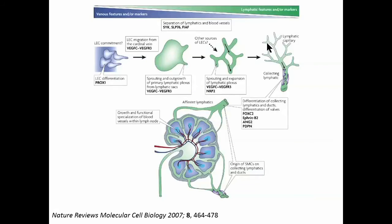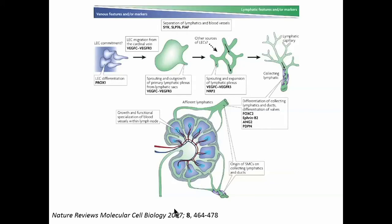This slide is a recapitulation of what I just mentioned, simply illustrating that similar events have to occur within the developing lymphoid organs as well, so that eventually there is a structural relationship between the node, the afferent lymphatics, and the efferent lymphatics in order for all of the functions to be upheld.